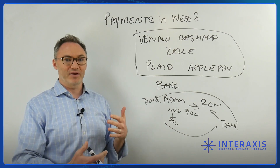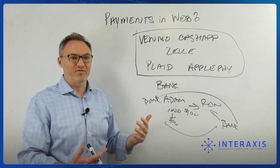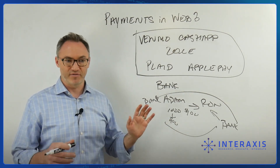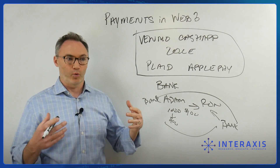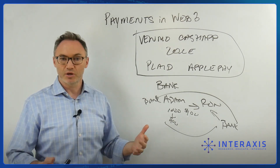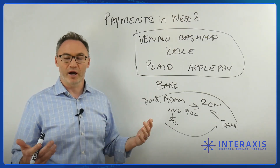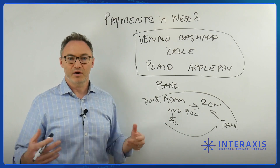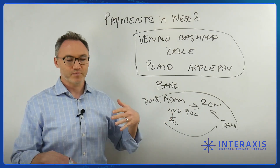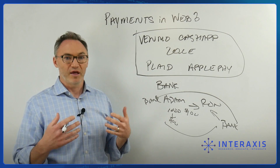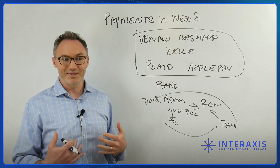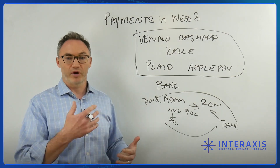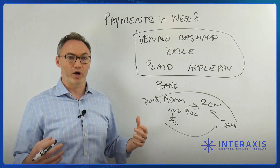That reliance on banks led to the mortgage crisis of 2007, 2008, 2009, which brought the world economy to its knees in the Great Recession. We realized the banks did risky things with our deposited money, lost enormous amounts, got bailed out while we didn't. That's why Bitcoin was created. In the next video, we'll talk about Bitcoin, payments, and how that moves forward.